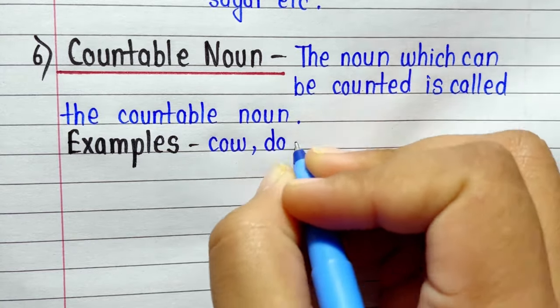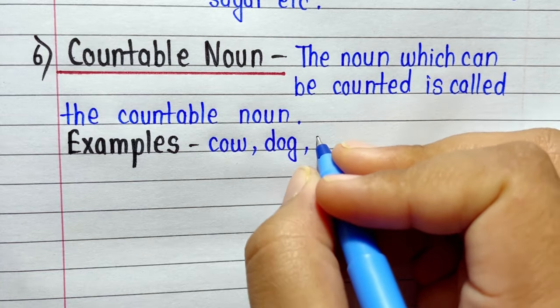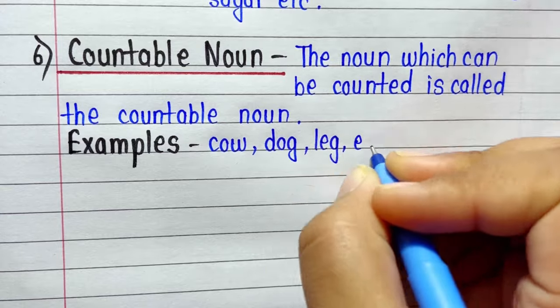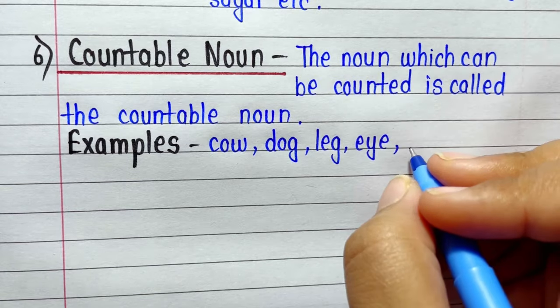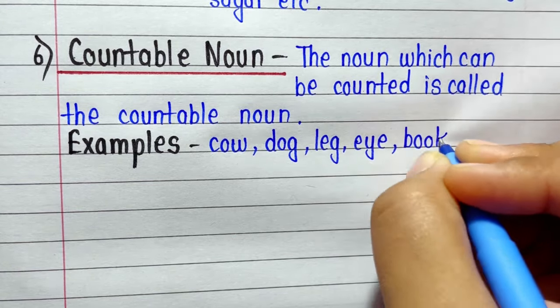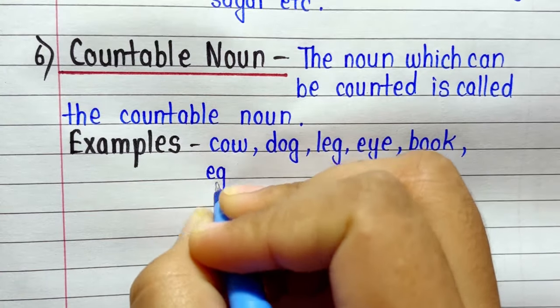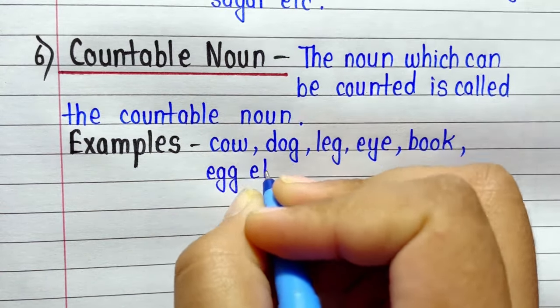Number six: Countable Noun. The noun which can be counted is called the countable noun. Examples: cow, dog, leg, eye, book, egg, etc.